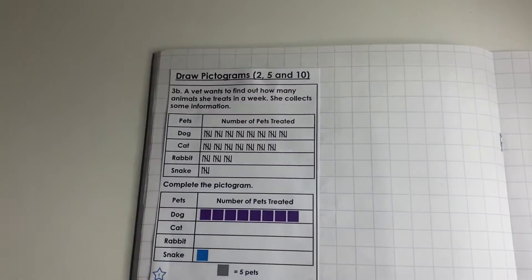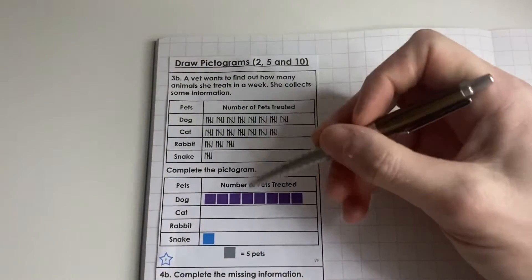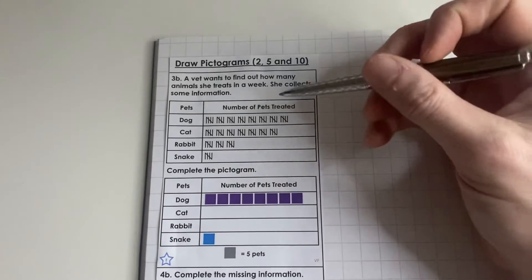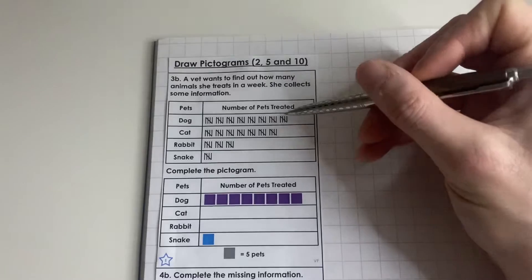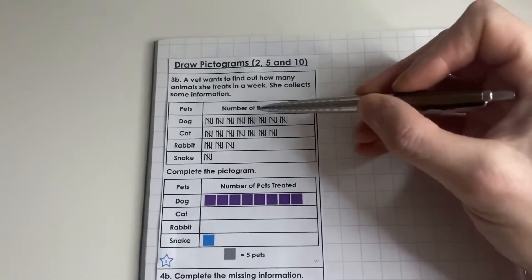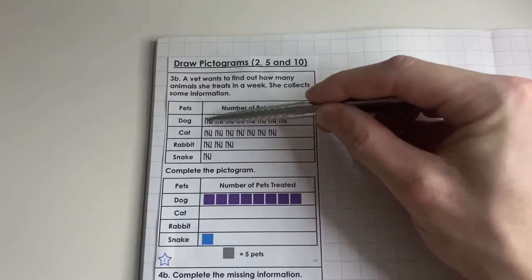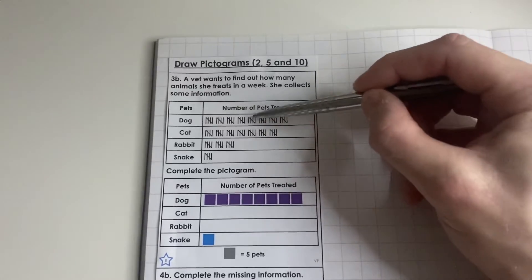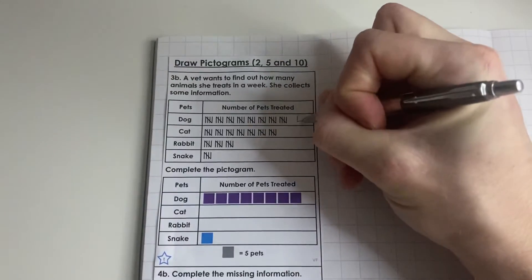It says here complete the pictogram. Before we start adding into our pictogram, I suggest you should work out the total amount of pets treated for each pet. First of all, we go with dog: 5, 10, 15, 20, 25, 30, 35, 40. So we just put 40 there.